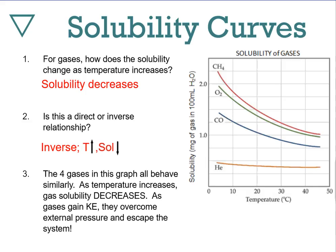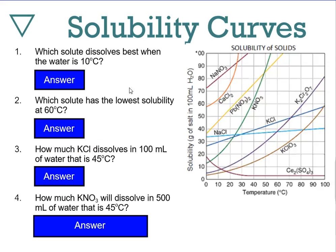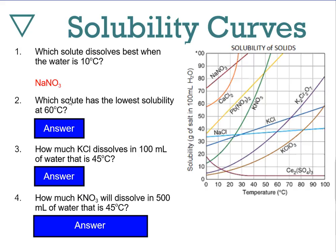Which solute dissolves best when water is at 10°C? Keep in mind the y-axis is solubility in grams of salt per 100 milliliters of water — this can have subtle variations, so be mindful of what your axis says. At 10°C, the most soluble substance looks like sodium nitrate.